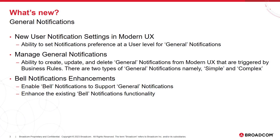What's new in 16.1.2? We introduce the ability to manage general type of notifications from Modern UX. As part of General Notifications, users can set General Notifications preference at a user level. As part of Manage General Notifications, users can create, update, and delete general type notifications from Modern UX that are triggered by business rules. There are two types of General Notifications: simple and complex. As part of Bell Notification Enhancements, we enabled Bell Notifications to support General Type Notifications and enhanced the existing Bell Notifications functionality.